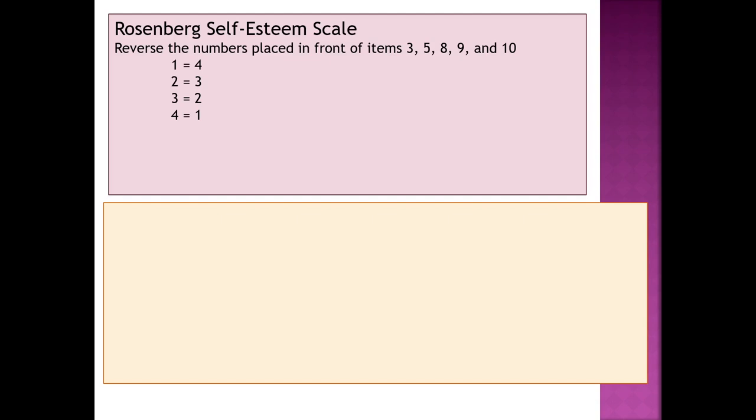That first 10-item scale is called the Rosenberg self-esteem scale. To score yourself, reverse the numbers you placed in front of items three, five, eight, nine, and ten. What that means is if you gave item three a one, switch that to a four; a two becomes a three; a three becomes a two; a four becomes a one. Go through that process for all five of those items. Now, with those new numbers, take all ten items, add them up, and that gives you a total score. Sum the reversed scores for items three, five, eight, nine, and ten with the original scores for items one, two, four, six, and seven.